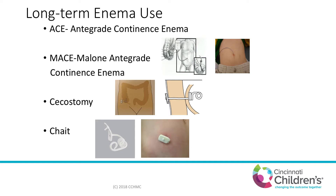A Malone appendicostomy uses the appendix to make a valve, and it's usually brought out through the belly button. A cecostomy works in a similar way, but the surgeon uses some kind of device placed in the cecum, which is part of the colon. That allows them to give the flush in an anterograde way, but it requires something on the outside of the skin — a cecostomy tube, button, or G-tube-type device.